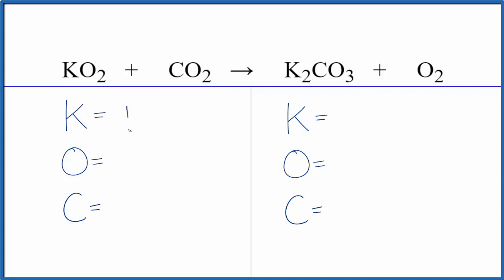We have one potassium atom, oxygens we have two. Make sure you count the two here as well. So we have a total of four, one carbon atom. In the products here, we have two potassium atoms, oxygens three plus these two here, five, and then just the one carbon.